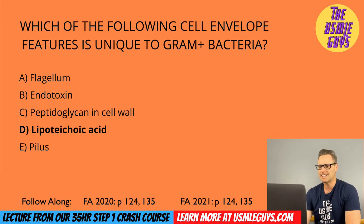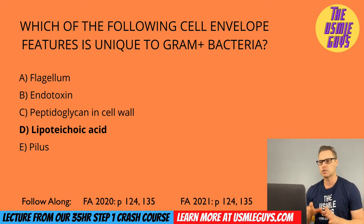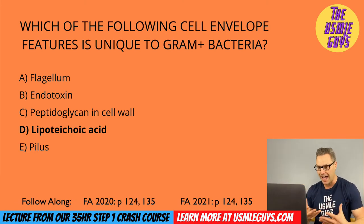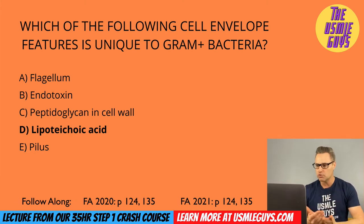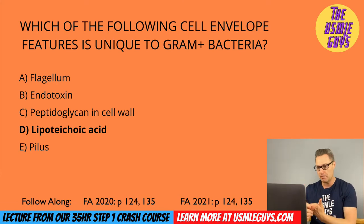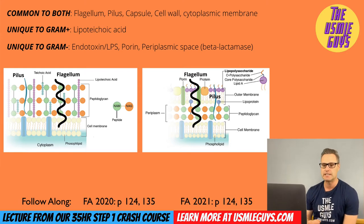The correct answer is D. You know the basic structure of a bacterium — this is stuff you learned in undergrad, so I don't want to waste time on that. The most efficient way to review this is to know what structures a bacteria has to help it survive and thrive, as well as specific structures unique to the gram-positive and gram-negative organisms.